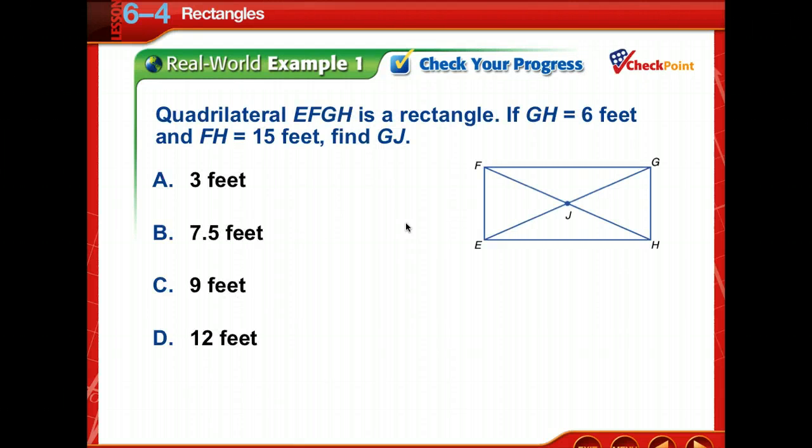Time to check your progress. Pause the video for a moment, then come back and check your answer. Did you get 7.5 feet? Very good. We are to find JG. JG is half of GE, and GE is congruent to FH. So FH is 15, and half of that is 7.5 feet.